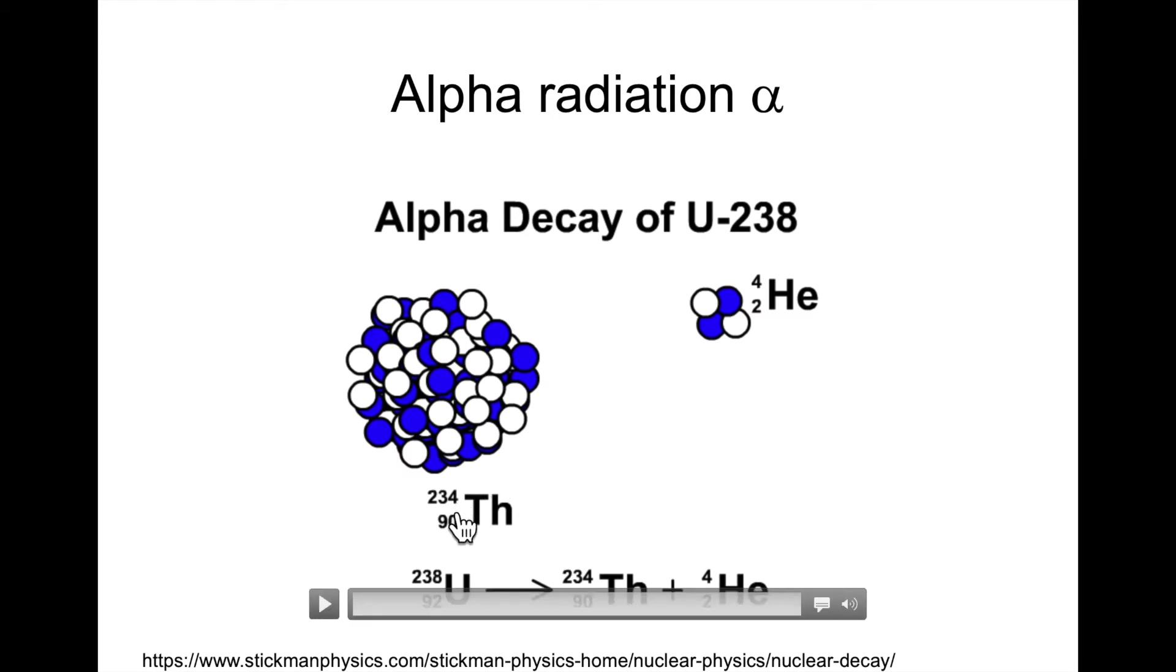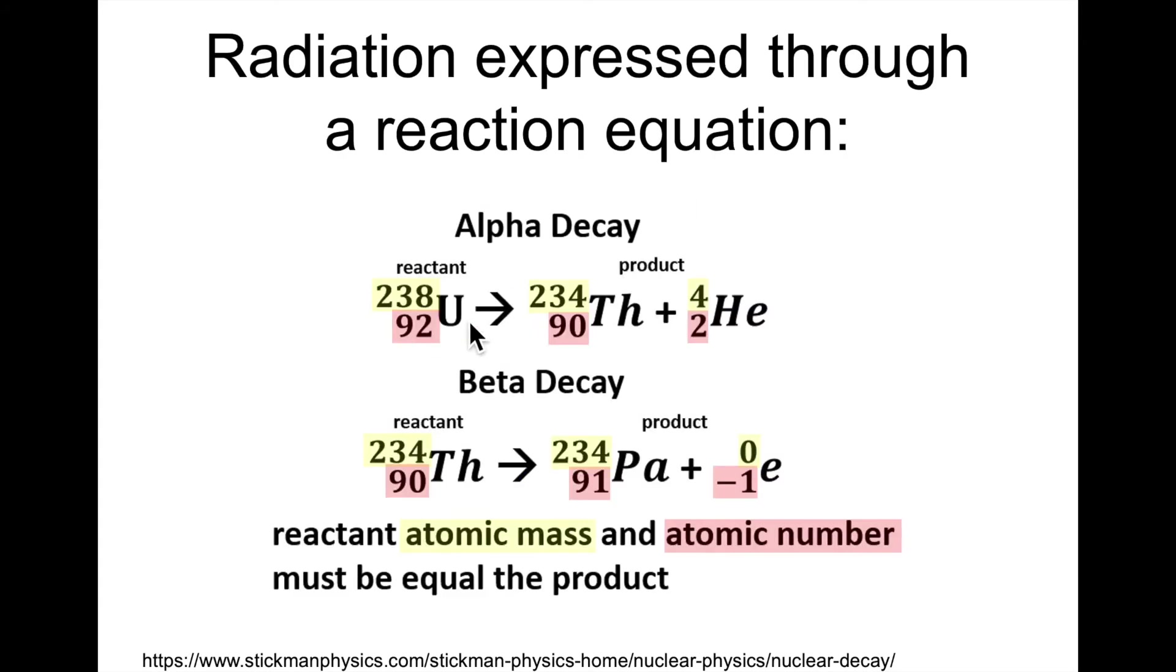Which has a mass of 234. Let me show you using the next slide. You have here the actual equation: uranium 238 with the atomic number of 92 then turns into thorium, symbol Th, with atomic number of 90 and a mass of 234.